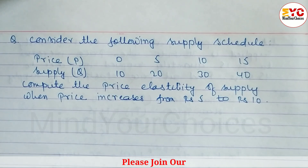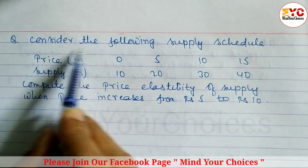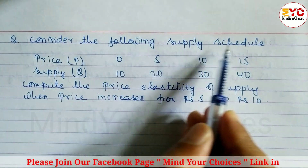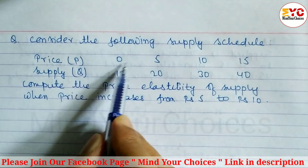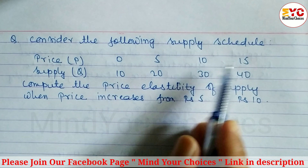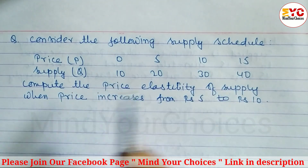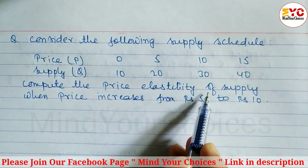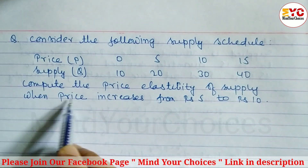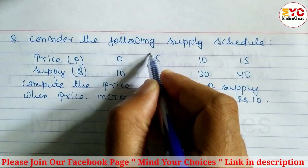Hello everyone. This question is taken from elasticity of demand and supply. Consider the following supply schedule: price given and supply also given — price: 0, 5, 10, 15 and quantity supplied: 10, 20, 30, 40. We have to compute the price elasticity of supply when the price increases from 5 to 10.